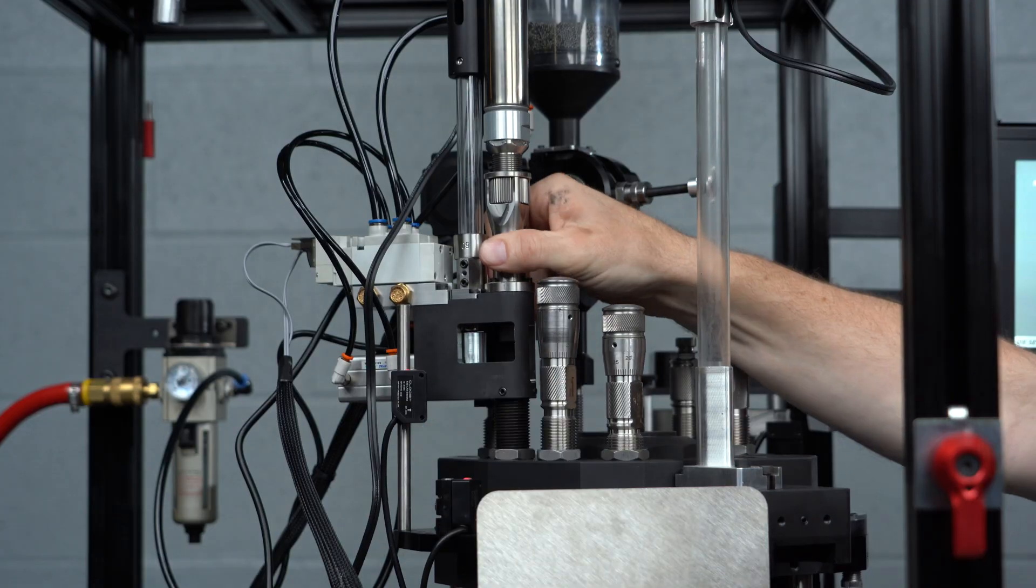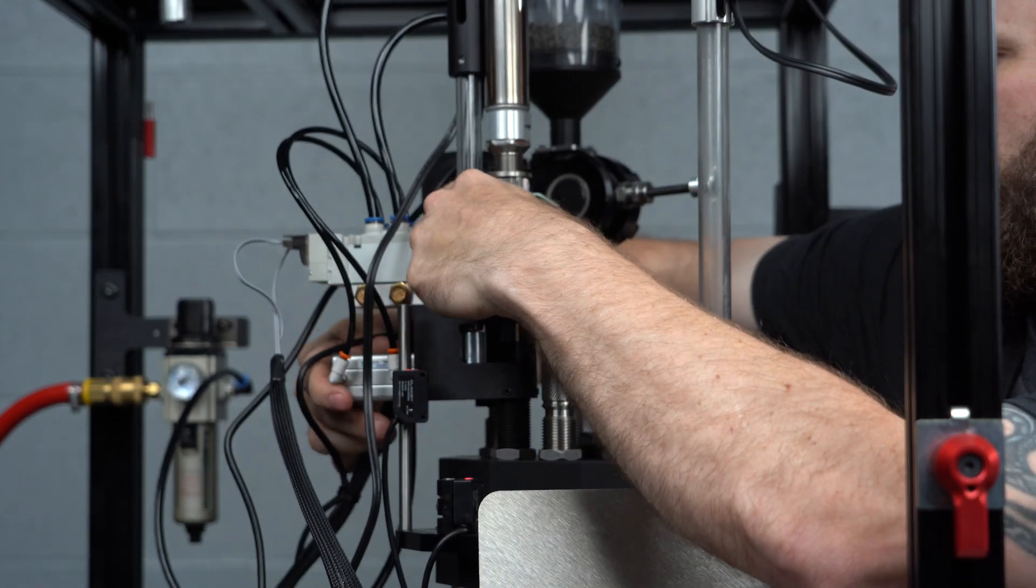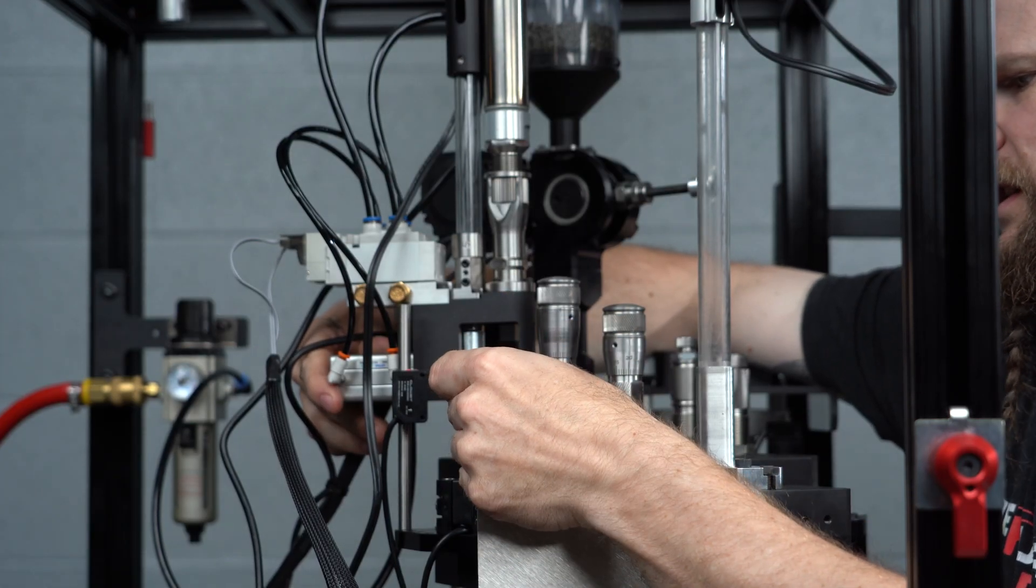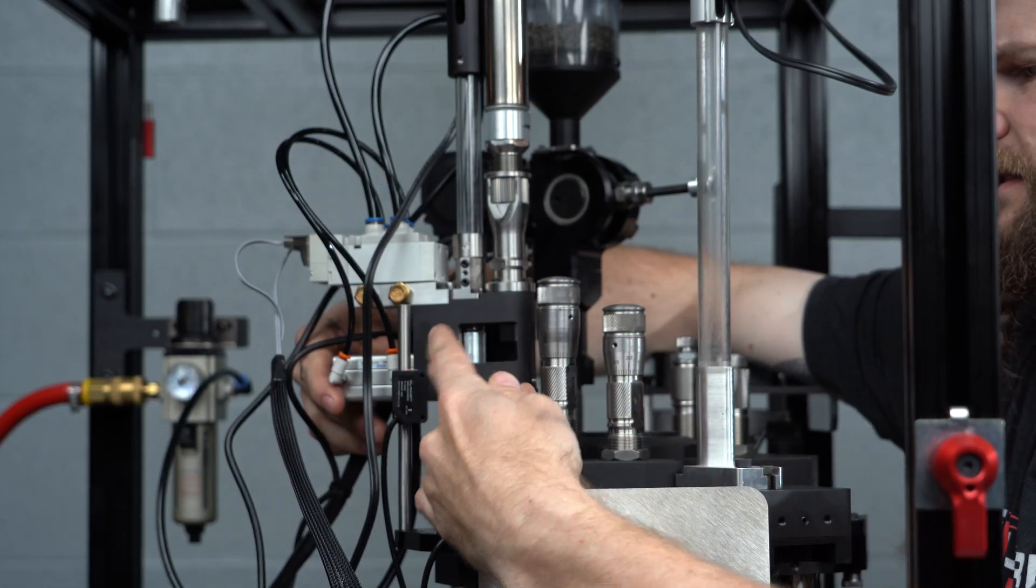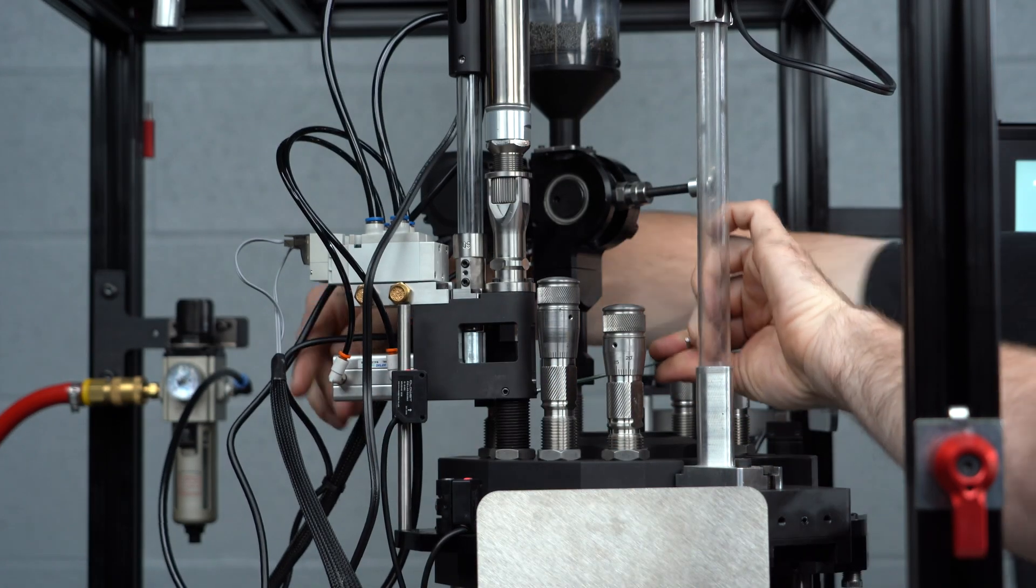Using a 3/32 inch allen, we're going to first make sure that we are seated correctly on the die, which we are, and we can secure these three set screws with a 3/32 inch allen to secure the dropper assembly to the die body.